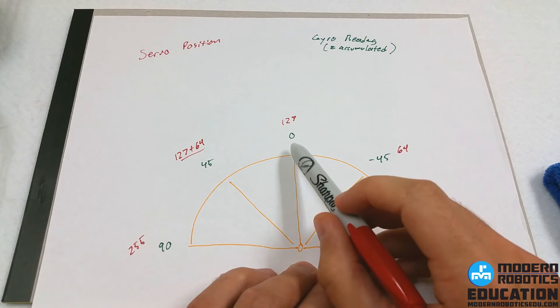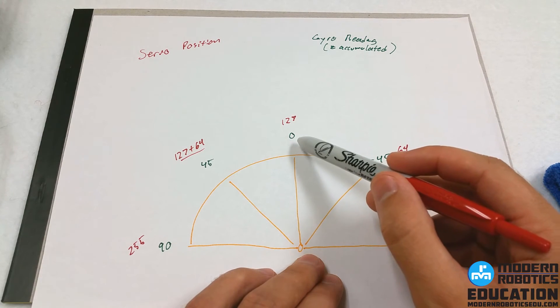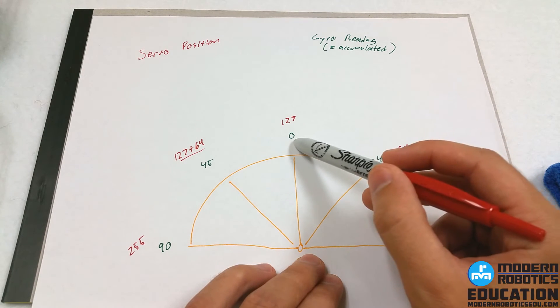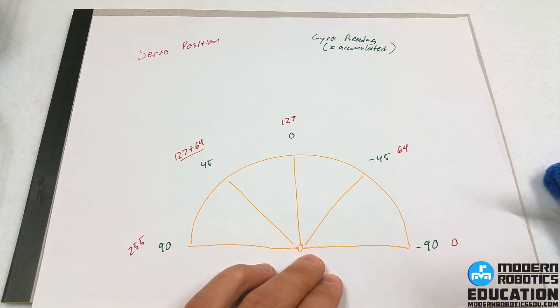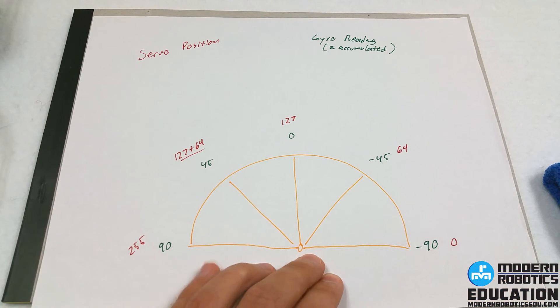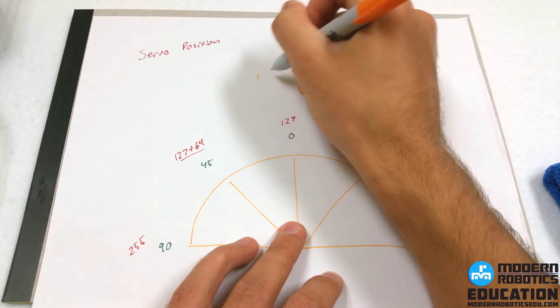So since it's 0, remember we're taking the gyro readings and going to the servo positions. So we're going to take in 0, we've got to get to 127. So we are always going to add 127.